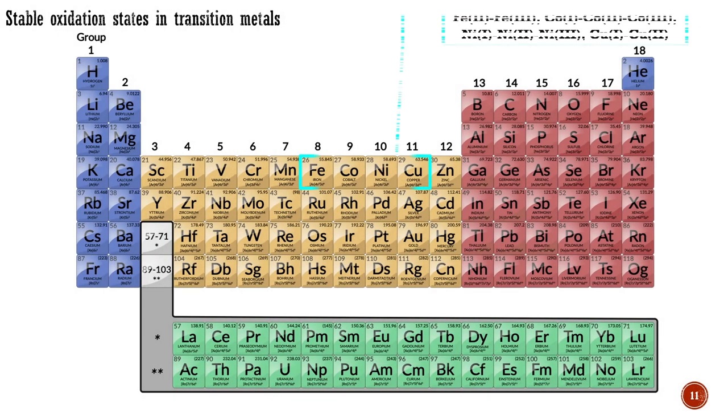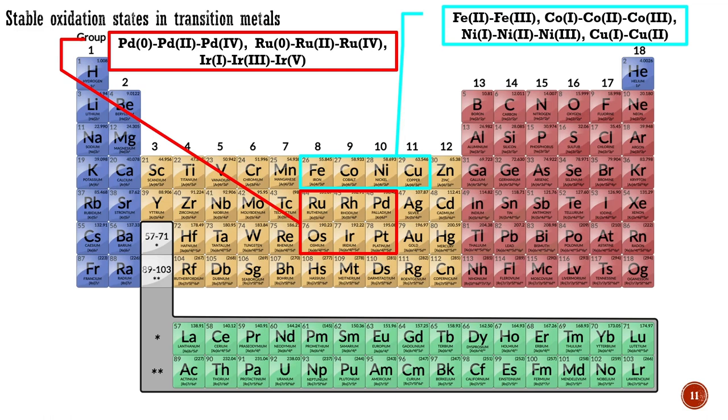First row metals typically have stable oxidation states one unit apart and undergo one-electron redox changes as a result. The second and third row typically have stable oxidation states two units apart and prefer two-electron redox changes. In catalysis, when organometallics have to bring about multi-electron reactions, two-electron redox steps are desirable because they avoid high-energy, odd-electron intermediates. Although second and third row metals have been preferred up to now, the price rises of the precious metals and the green chemistry aspiration of avoiding rare elements means that first-row substitutes will increasingly be sought.